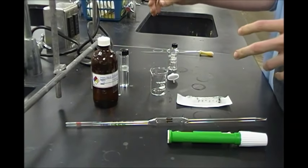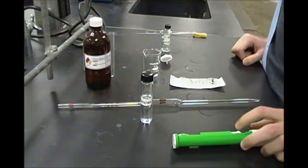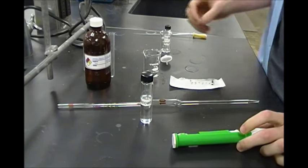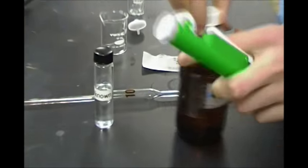What we're first going to do is take some of our unknown, and we have to dilute it because it's way too concentrated right now. So we will dilute it in our solvent, which is going to be Methylene Chloride.